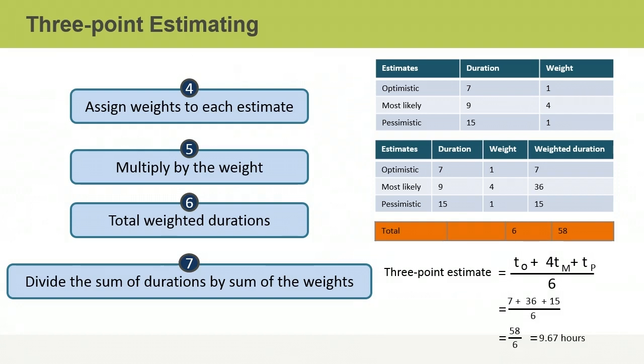In the sixth step of the process, you total the weighted duration of each estimate. In this case, the sum is 36 plus 15 plus 7. This gives you a total of 58.